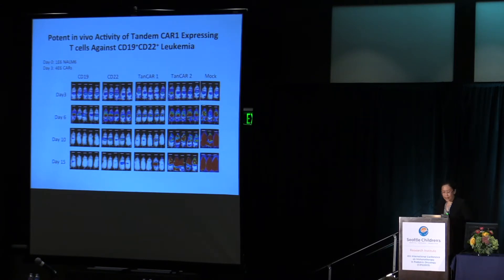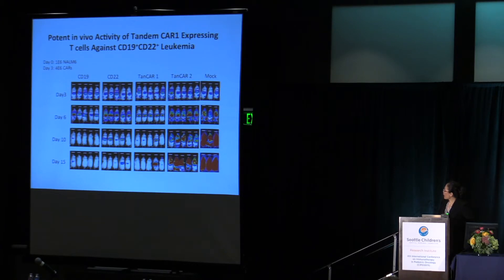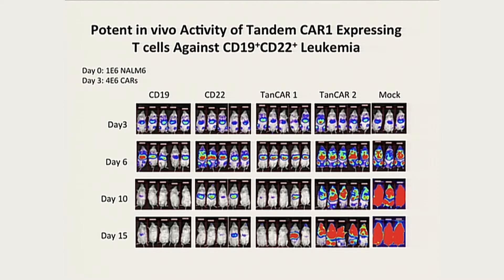We then tested these TanCARs using a NALM6 model. TanCAR2 really doesn't have much activity, but TanCAR1 has quite potent activity against this CD19-positive and CD22-positive leukemia line.